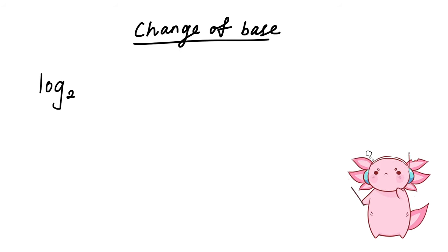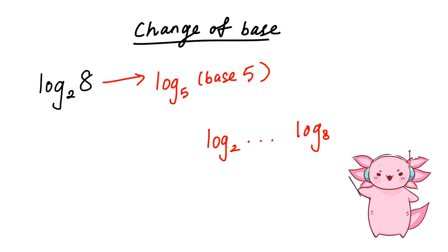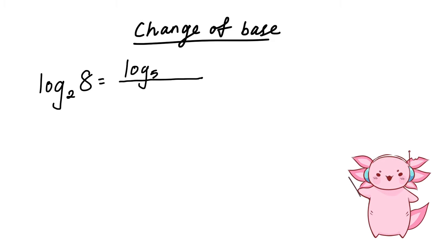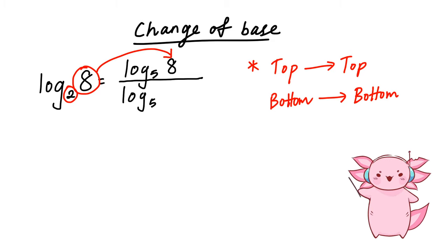To change the base of log₂8 into base 5, we usually want to change to the lowest base among all the logs. The first step is to put down a fraction with log base 5 on both top and bottom. The original top (8) goes to the top and the original bottom (2) goes to the bottom, giving log₅8 ÷ log₅2.